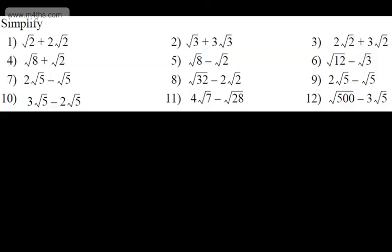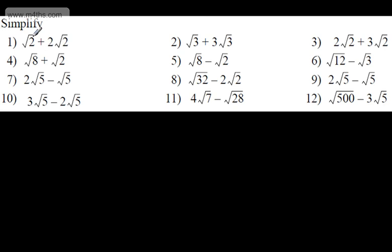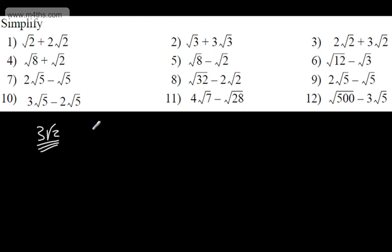Let's go ahead and start. We've got root 2 plus 2 root 2 — that simply gives me 3 lots of root 2. Remember, that's just an exact value. On this one, we're going to have root 3 plus 3 root 3. That's 1 of them plus 3 of them, giving 4 lots of root 3. So that's nice and straightforward.